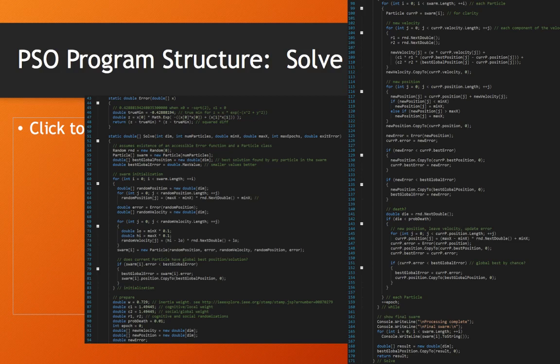You see it initializes the swarm and then checks if we have the global best position and then iterates through the life. As far as whether a particle should die off or not, that can conserve resources.